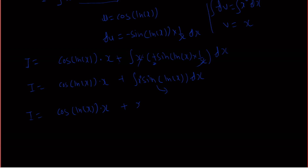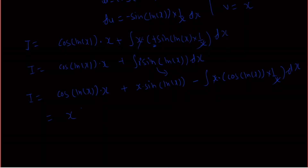We integrate x to the power 0, that is x, and leave sine(ln x) as it is. Now minus times: the integration of x to the power 0 is x, and the differentiation of sine(ln x) is cos(ln x) times 1/x dx. We cancel x, so we get x times cos(ln x) plus sine(ln x).